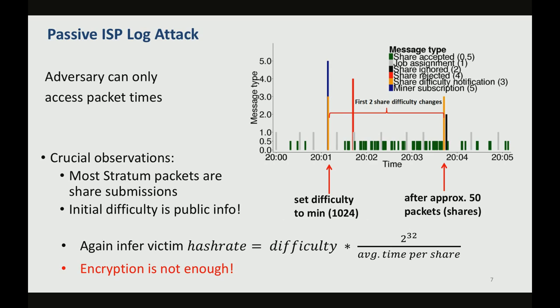The importance of this scenario is not the scenario itself, but that it is actually very similar to a scenario where your packets are protected with something like TLS or blanket encryption. In that scenario, the attacker is not able to look at the packet's payload. However, he's still able to infer information from the metadata of the packets. So the success of this attack is actually telling us that encryption is not enough.